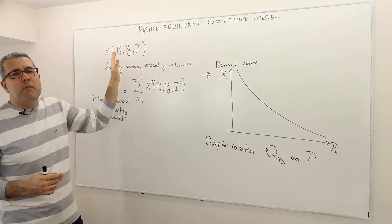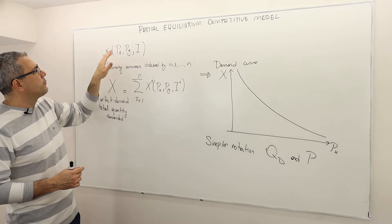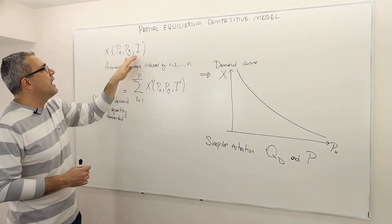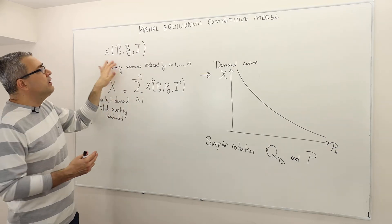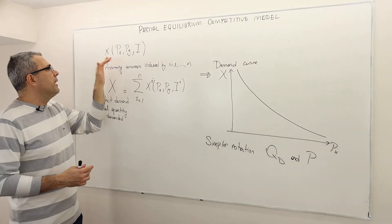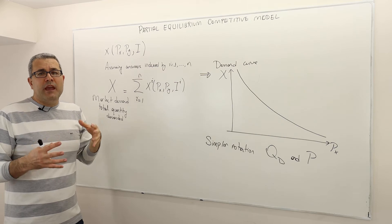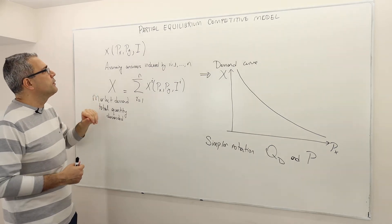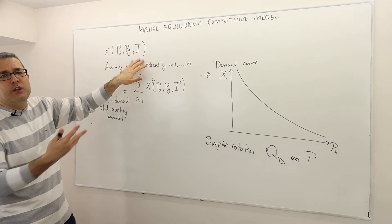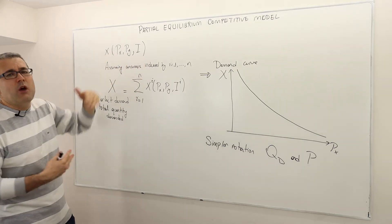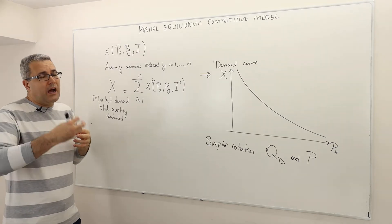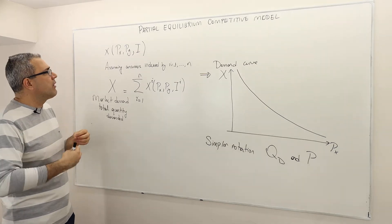If there are multiple goods, it depends on the price of good one, price of good two, price of all the other goods, and then the income. Intrinsically, not explicitly maybe, but intrinsically, the demand also depends on the preferences or the utility function of the consumer. We do not put the utility function there, but we know that implicitly it depends on the utility function because we know how the demand is actually derived.